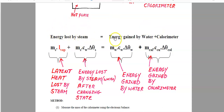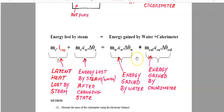In essence, the energy lost by the steam equals the energy gained by the water plus the energy gained by the calorimeter. The energy gained by the water and the calorimeter is the easy part, because there's no change of state involved. The energy gained by the water is: mass of water × specific heat capacity of water × change of temperature of water. The energy gained by the calorimeter is: mass of calorimeter × specific heat capacity of copper × change of temperature of the calorimeter. We can calculate each of these in joules.